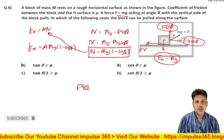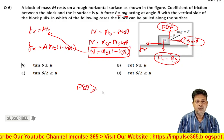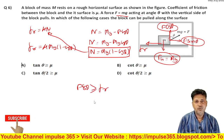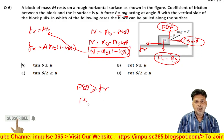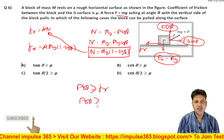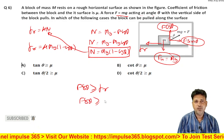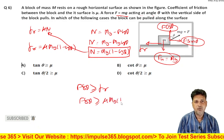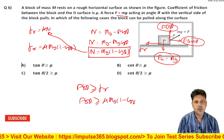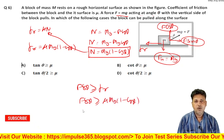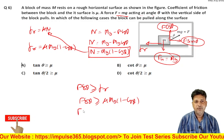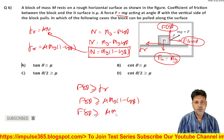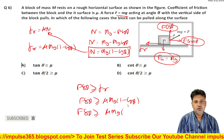For the block to move, F sin theta must be greater than or equal to the friction force, which is mu mg bracket (1 minus cos theta). So F sin theta is greater than or equal to mu mg (1 minus cos theta). Substituting F equal to mg into this expression.